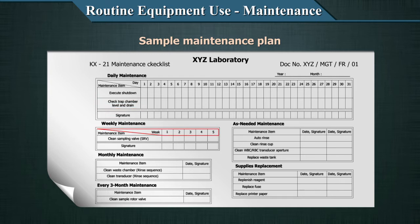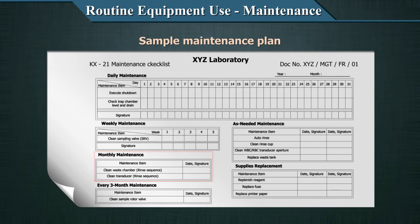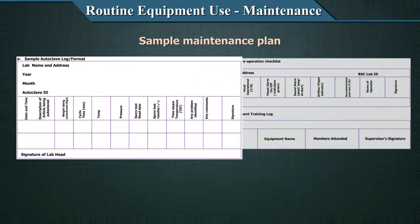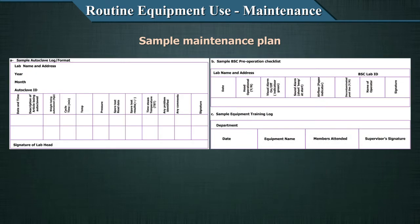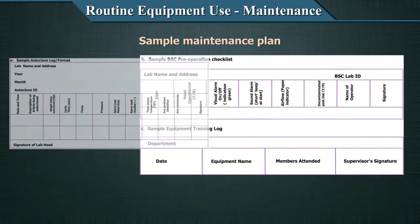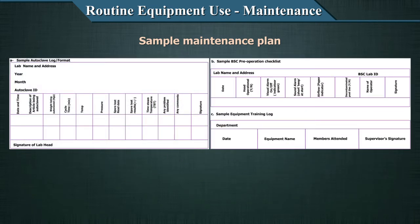For weekly maintenance, there are 4 or 5 weeks in a month. Every Monday, certain tasks are to be done, checked off, and documented. Following that, there will be monthly maintenance schedules. Another example shown is an equipment cleaning and decontamination format, a biosafety cabinet operation format, pre-operational checklist, and sample equipment training log. Training logs are also very important, and every aspect of equipment management has to be logged, formatted, and recorded.